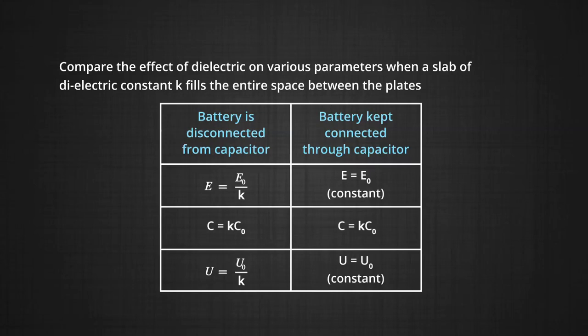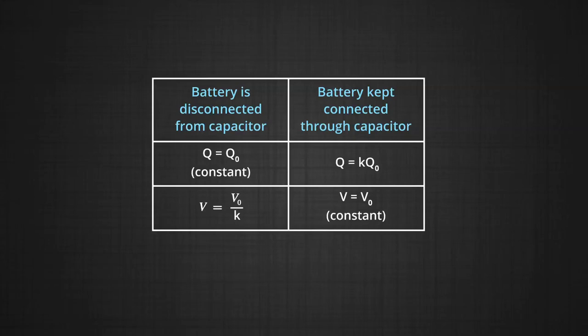Now, the capacitance. In both the cases, you see, capacitance increases, and in both cases it becomes equal to K times C₀. Now, the energy stored. When battery is disconnected, the energy stored decreases to U₀ by K, but when battery is kept connected, energy stored increases to K times U₀, because as the battery is still connected, charge — that is, energy — can flow from the battery to the capacitor. Now, what happens to charge? When the battery is disconnected, there is no source of charge, so no more charge can come in; therefore, charge will remain the same, that is Q₀. But when the battery is connected, there is a source of charge attached; therefore, more charge can be stored, that is, charge will be equal to K times Q₀.